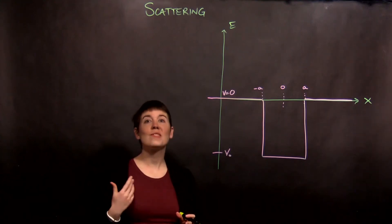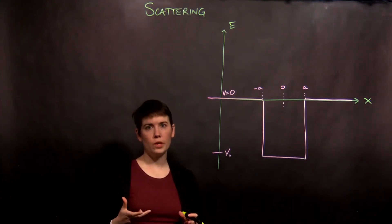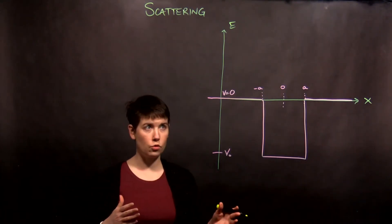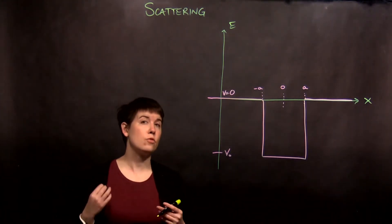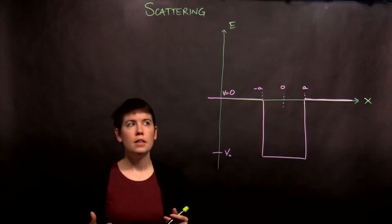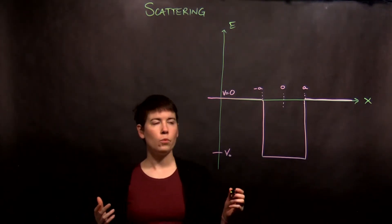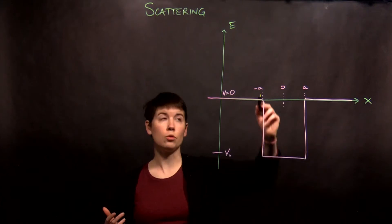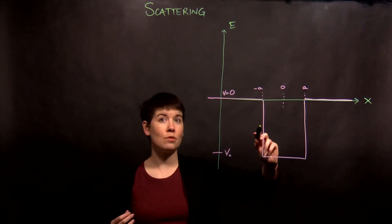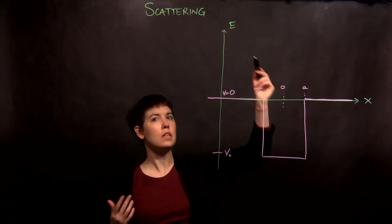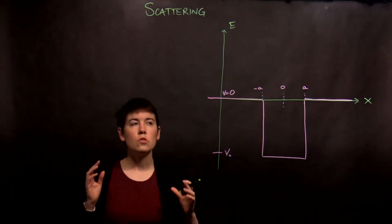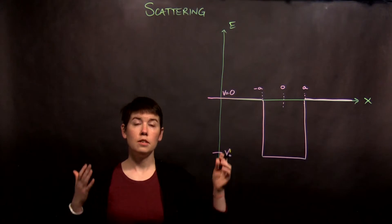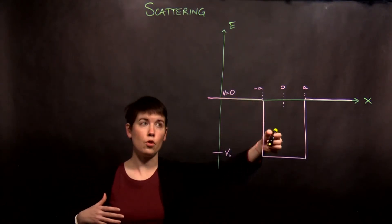Let's start to think through scattering situations. Scattering effectively means that we have free particles traveling and that there's then a change in potential. Now there are a few different ways this can go: one is that the potential drops, another is that the potential raises, another is that the potential raises higher than the energy of the particle. So let's start with the scenario where the potential is dropping.